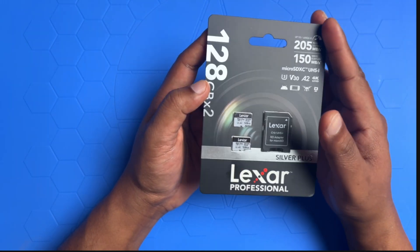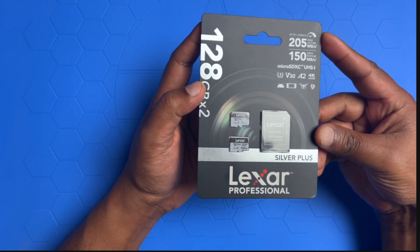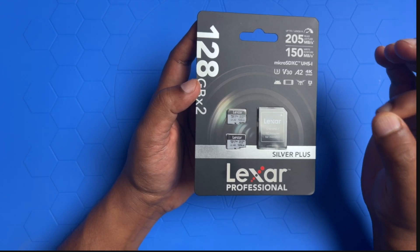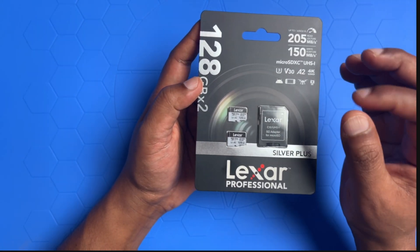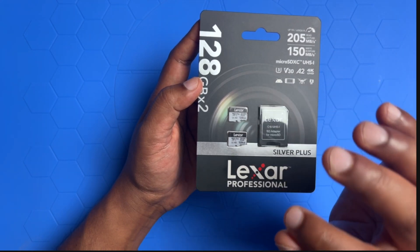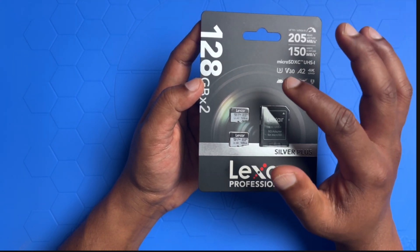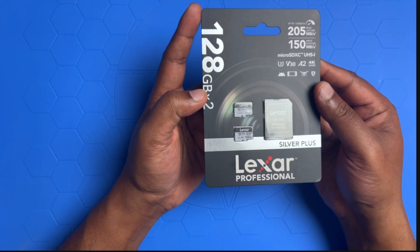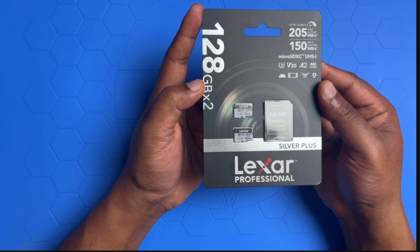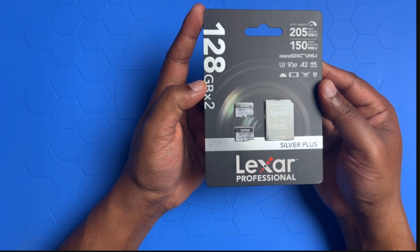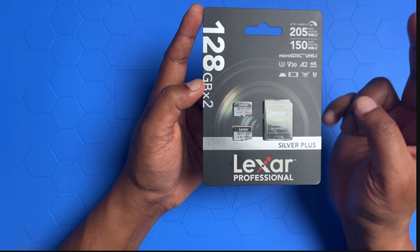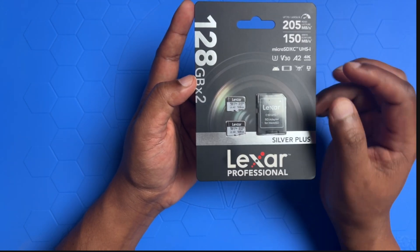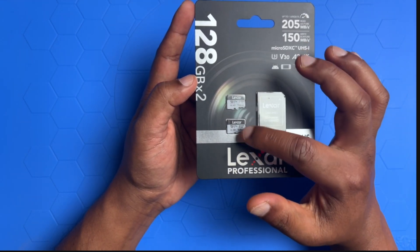This is the front of the package. The Lexar design is sleek and professional with a black background and silver accent that give it a premium feel. Right at the top you see 128GB x2 text, which tells you that this pack includes two micro SD cards, each with 128GB of storage.